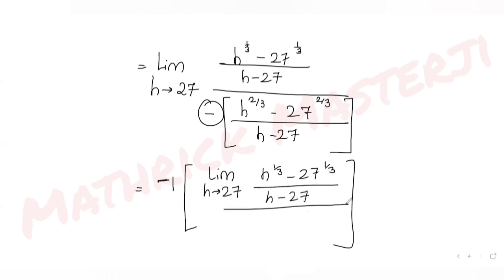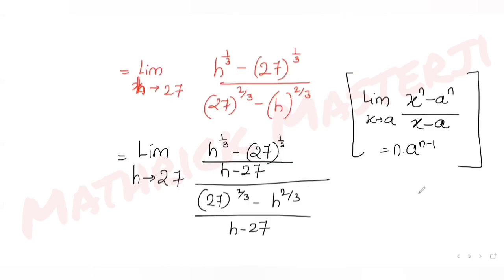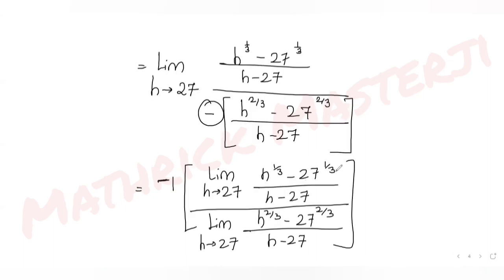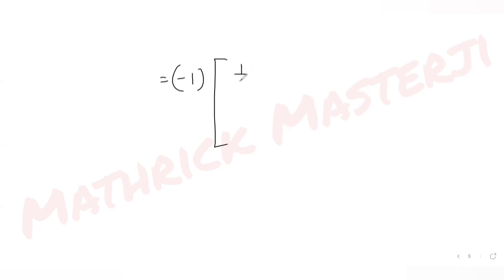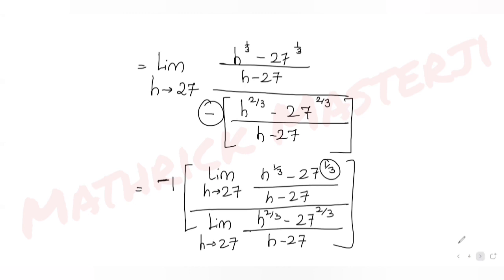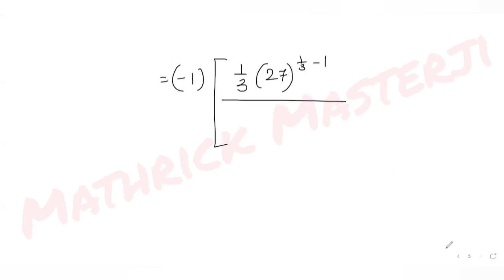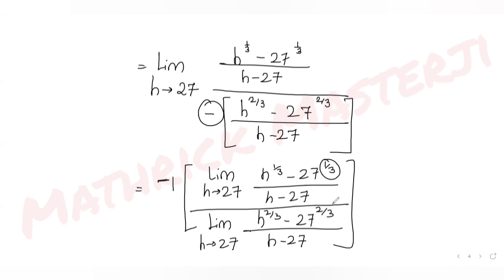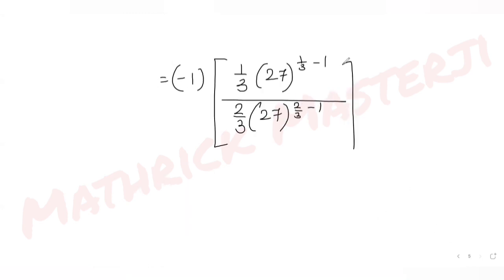Applying the formula limit x→a of (x^n − a^n)/(x − a) = n·a^(n−1): for the numerator, n = 1/3 and a = 27, giving (1/3)·27^(1/3 − 1). For the denominator, n = 2/3 and a = 27, giving (2/3)·27^(2/3 − 1). The 3s cancel, leaving −(1/2) in front.